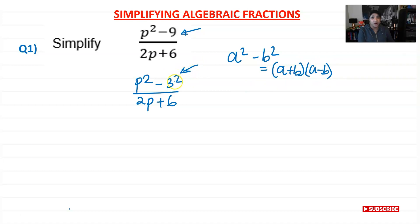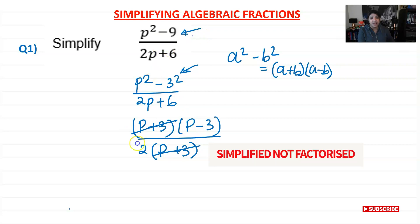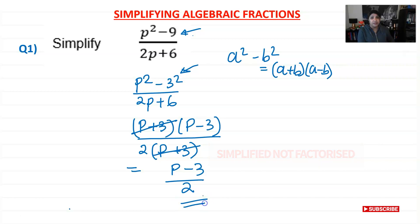For the numerator I'll have (p + 3)(p − 3). For the denominator, 2 is common so I take 2 out, giving 2(p + 3). Now I look for brackets that can cancel — I can see (p + 3) appears in both numerator and denominator, so those cancel. The fraction p squared minus 9 over 2p plus 6 simplifies to (p − 3) over 2. That's the answer for question one.